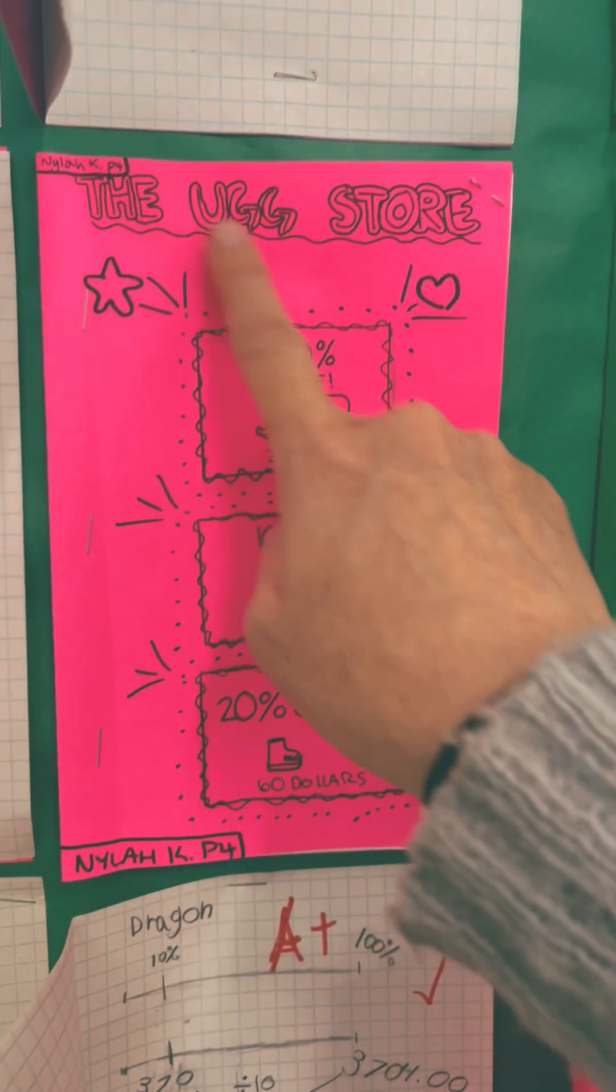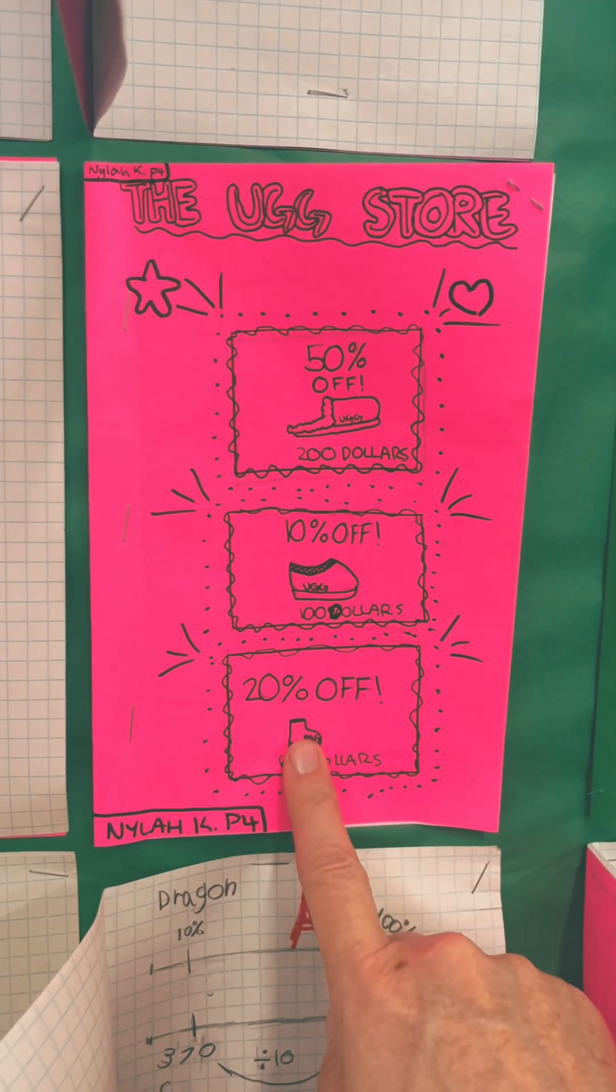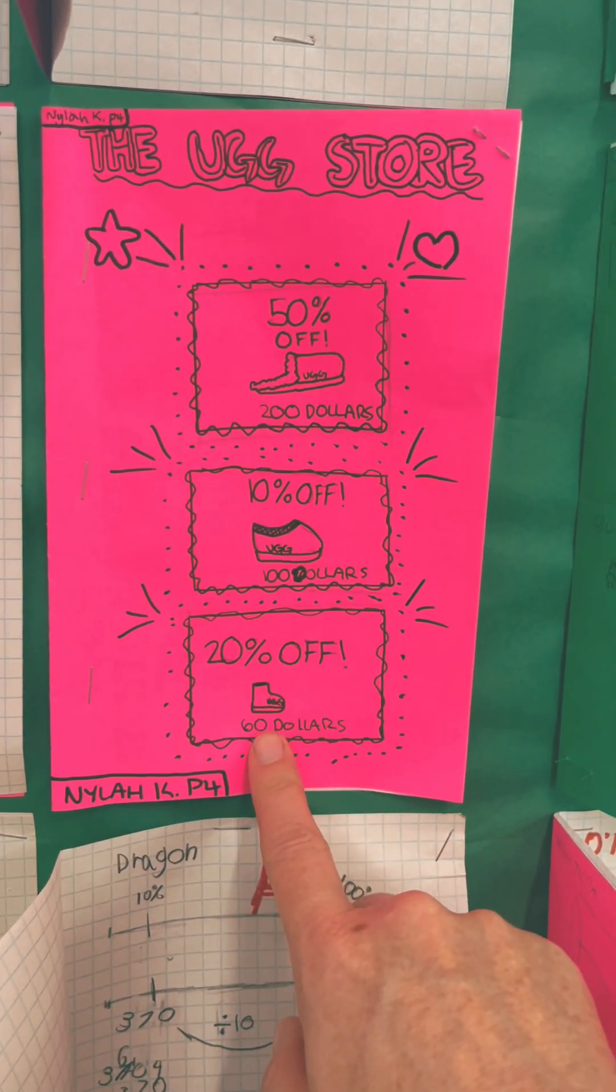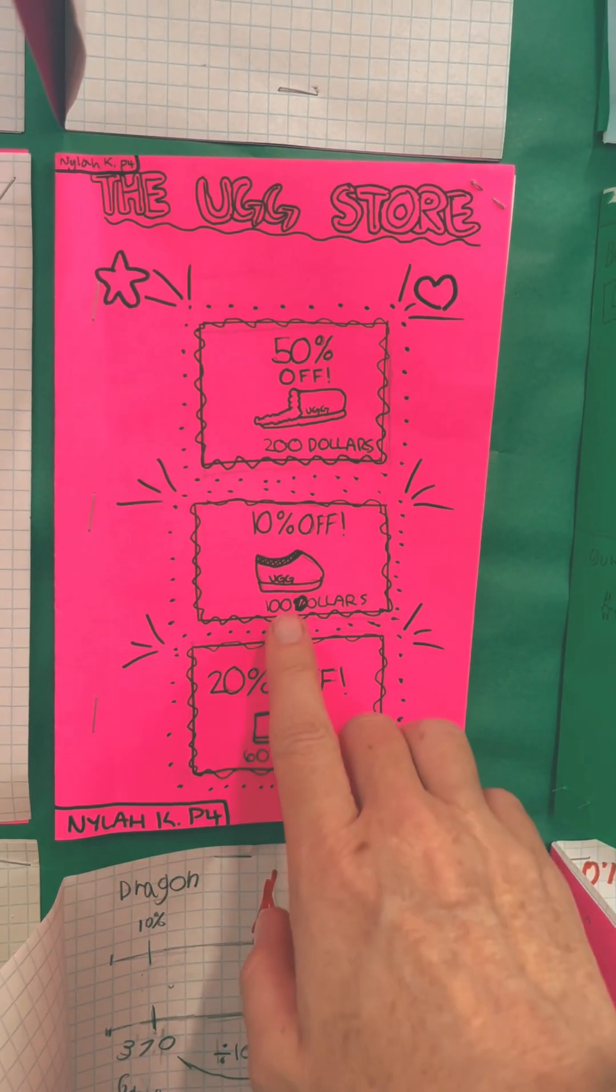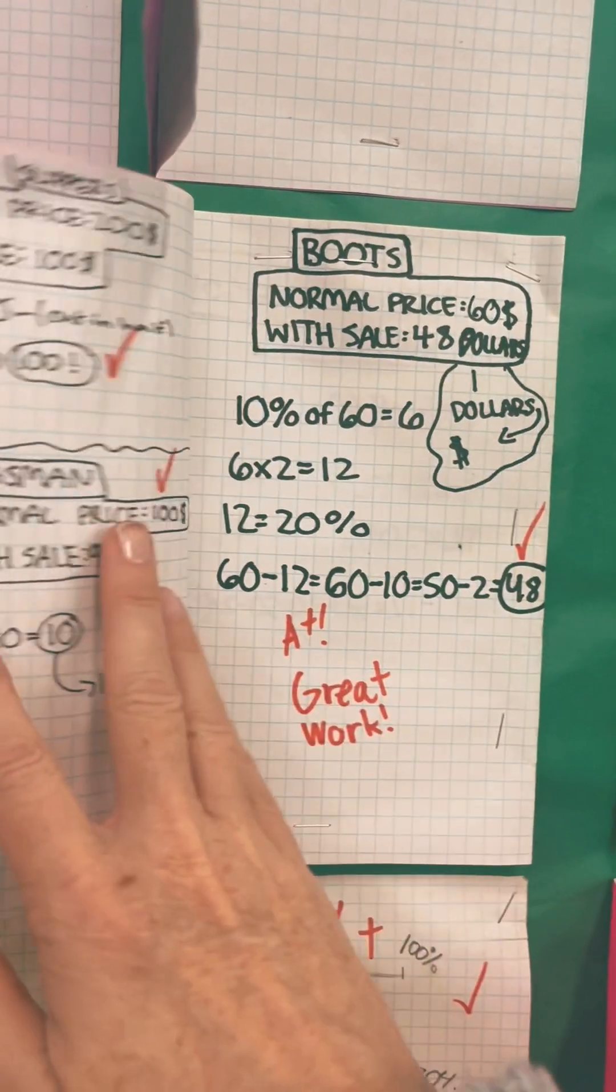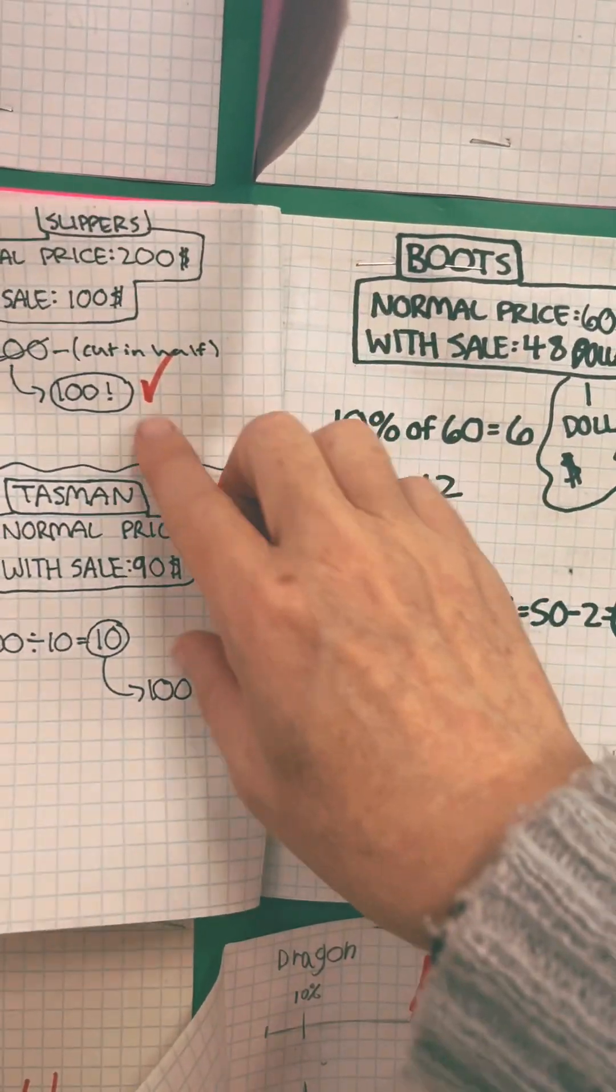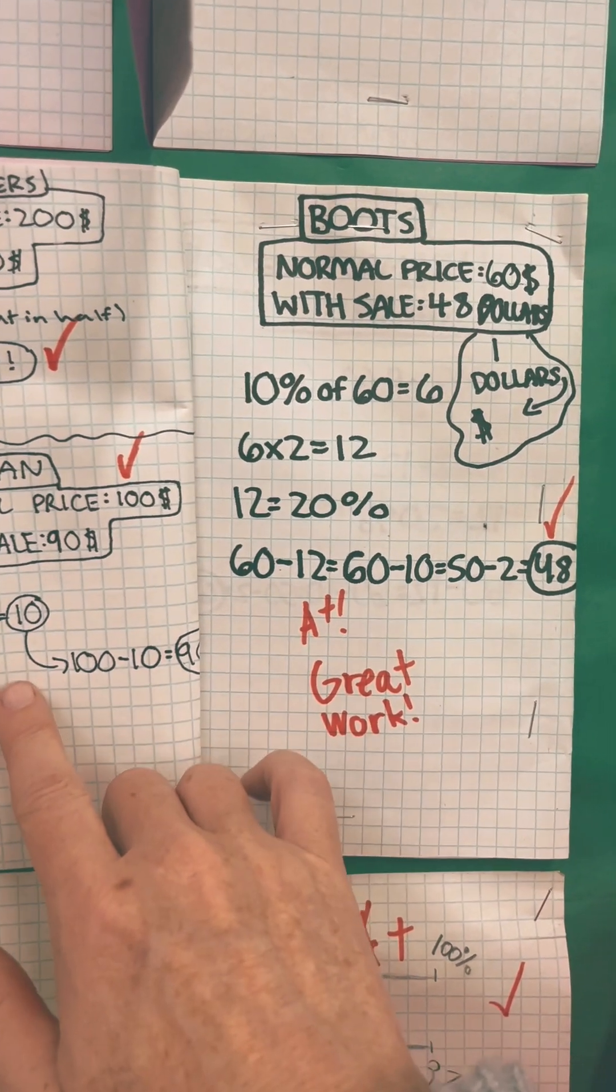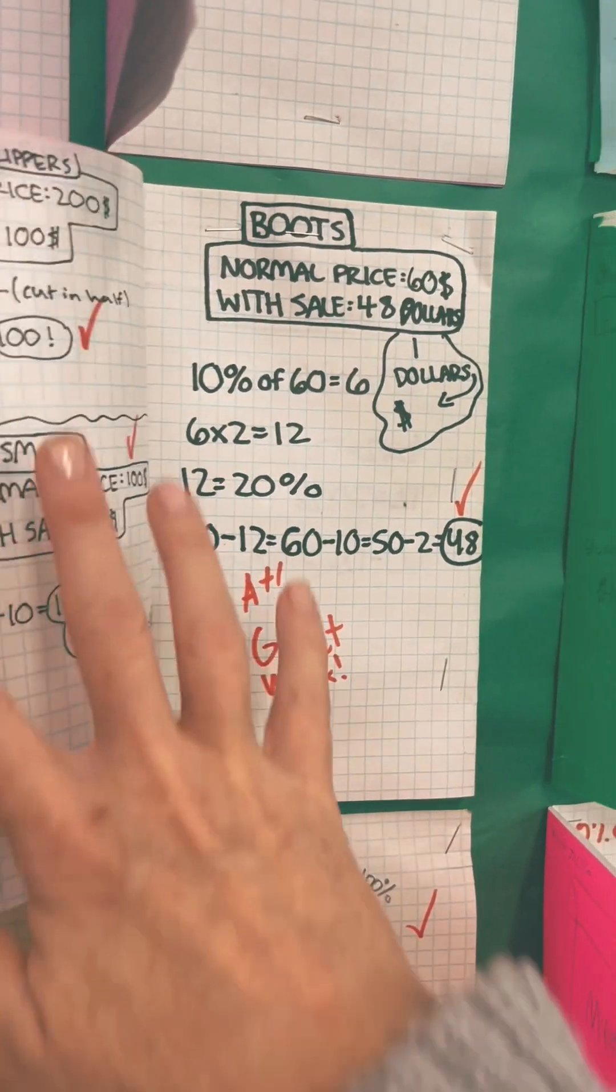Take a look at some of the work that my students did. This is the Ugg store. They picked three items - awesome illustrations. They had to determine the cost of the item and then what percent off. As you can see here, the student used the traditional algorithm to solve the problem and they were able to illustrate what they know.